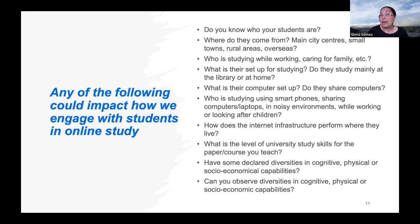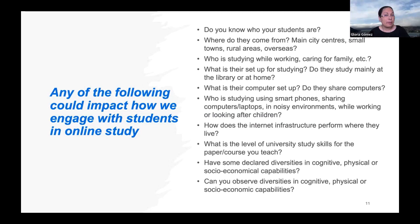Any of the following could impact how we engage with students in online study: Do you know who your students are? Where do they come from — main city centers, small towns, rural areas, overseas? Who is studying while working or caring for family? What is their setup for studying? Do they study at the library or at home? What is their computer setup — do they share computers? Who is studying using smartphones, sharing computers in noisy environments while working or looking after children? How does the internet infrastructure perform where they live? What is the level of university study skills? Have some of your students declared diversities in cognitive, physical, or socioeconomic capabilities?